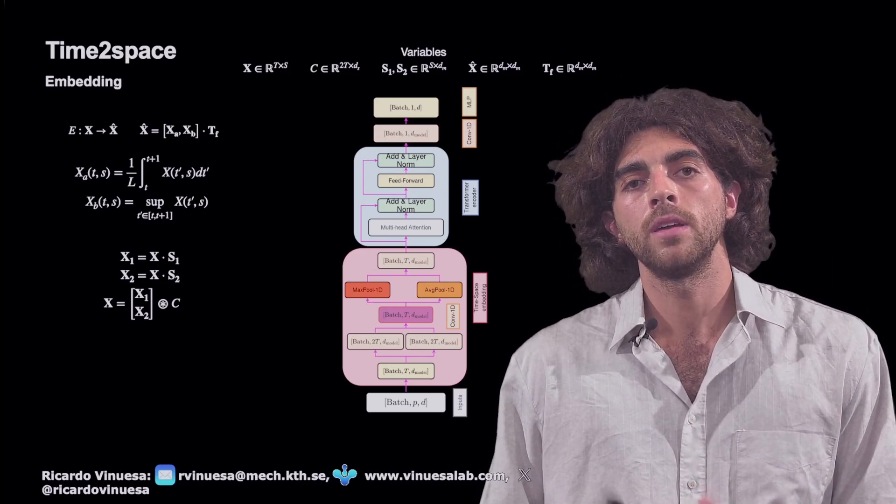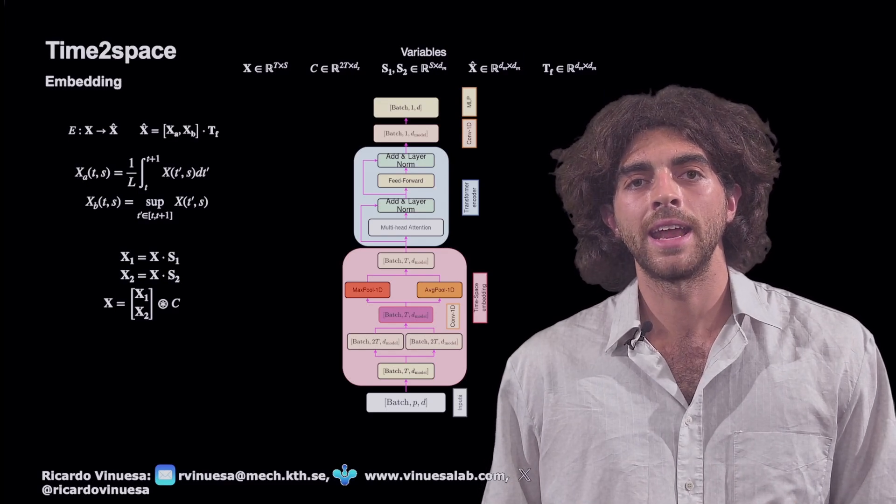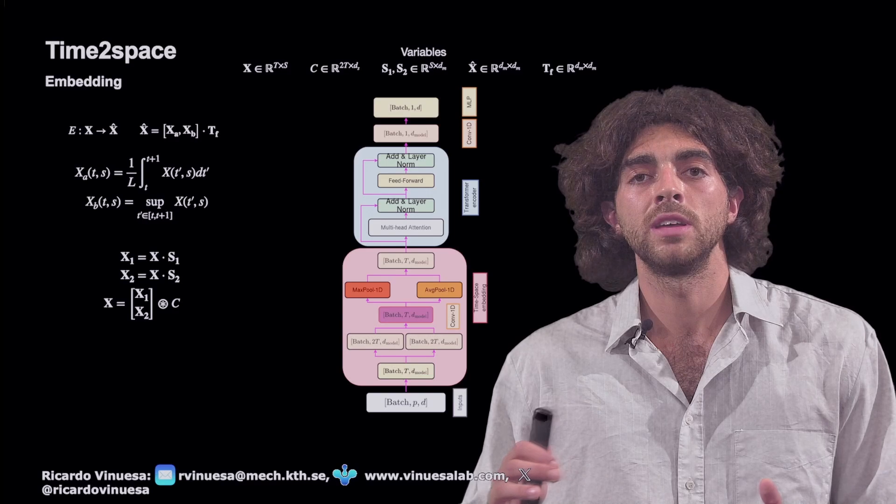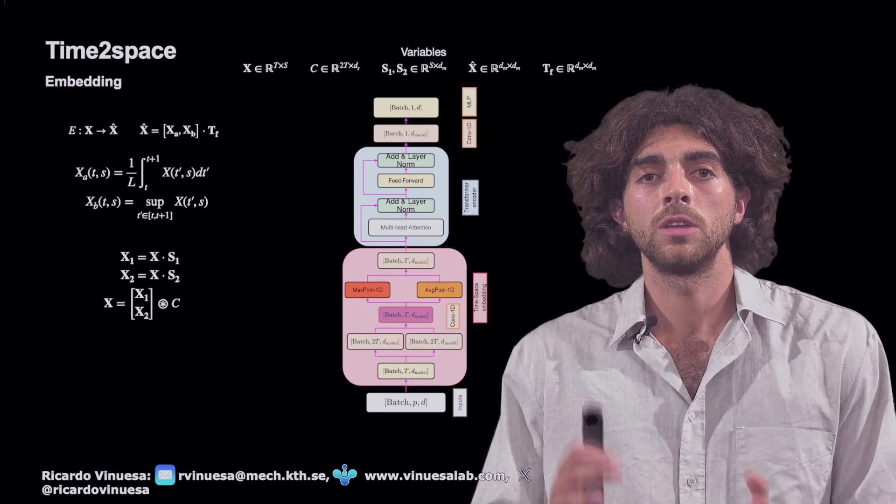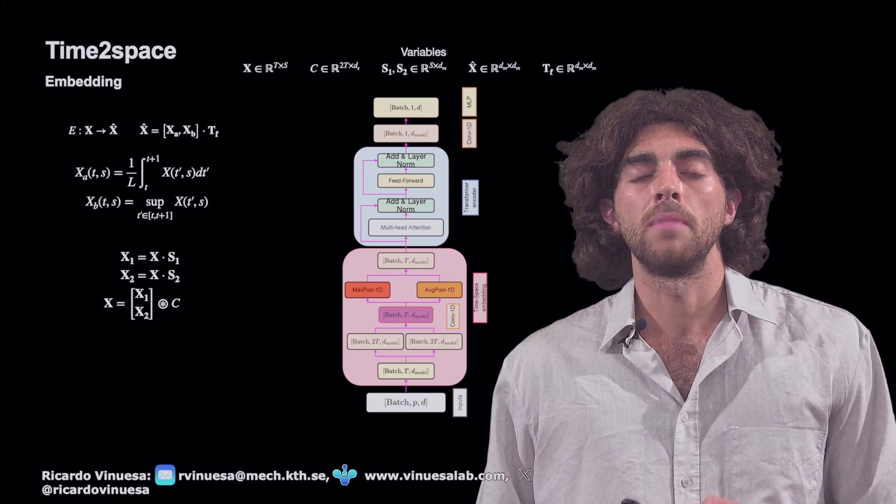The embedding map is composed so that the X hat matrix is a concatenation of matrices XA and XB, later multiplied by a matrix Tf. We call this matrix Tf because it's the matrix that in principle will retain the dependencies along time through the embedding.